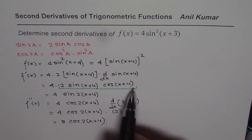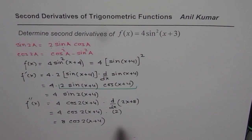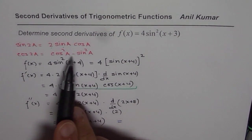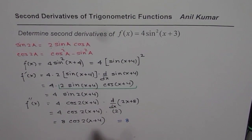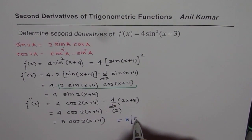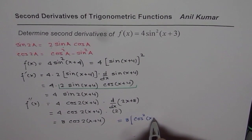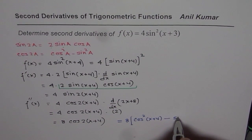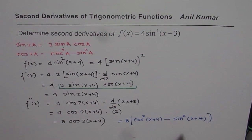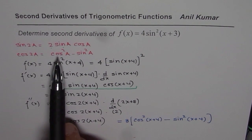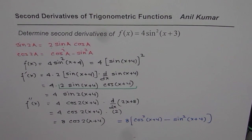If you do not simplify, you will get the expanded form, which is also equal to 8 times cos square of x plus 4 minus sine square of x plus 4. That is also correct — it is just the expanded form of the answer. So remember, whenever you are doing trigonometric functions, take the opportunity to simplify and then move forward — that helps.